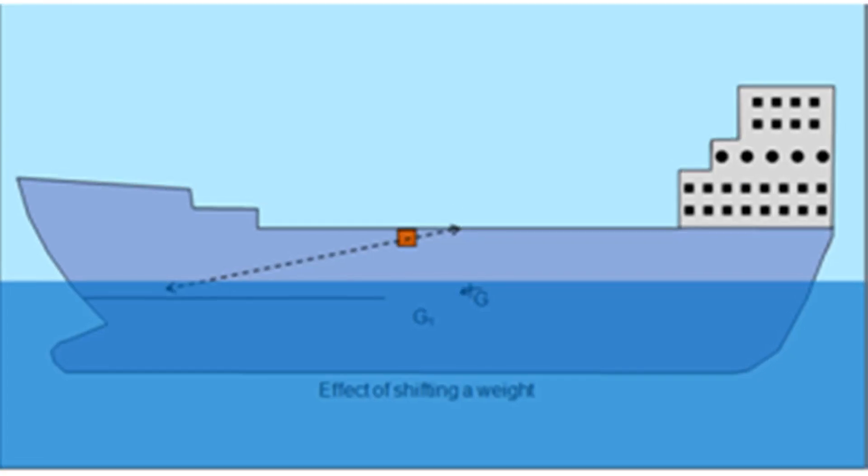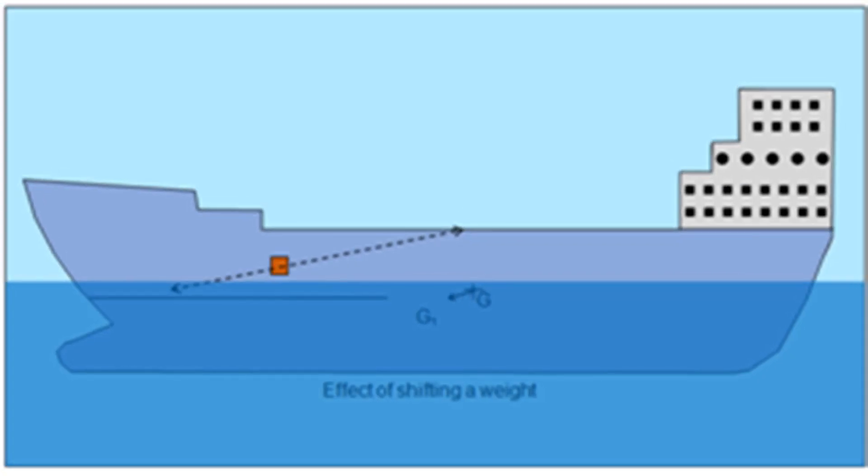When we shift the weight in the fore and aft direction, the trim is caused or changed. We will talk about trim at a later stage. At this stage, I want to talk about the shift of weight in the athwartship direction and the shift of weight in the vertical direction.